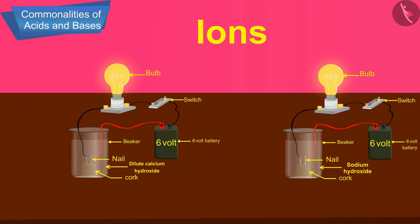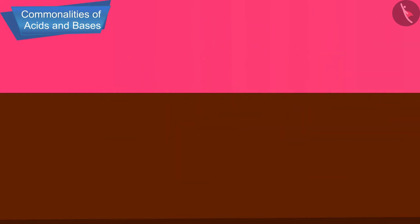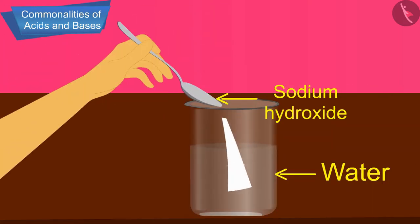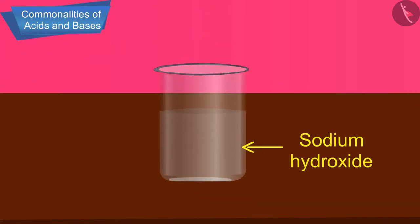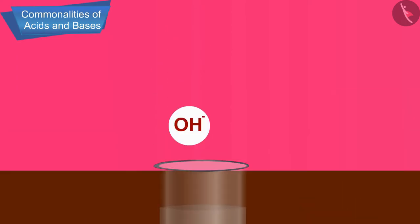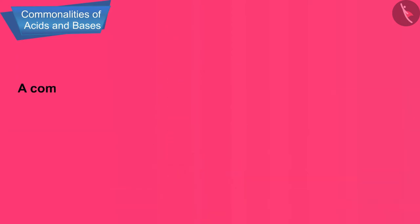So we can conclude that when a base is dissolved in water, it always produces hydroxide ions OH-. For example, sodium hydroxide is a base because it dissolves in water to produce hydroxide ions.